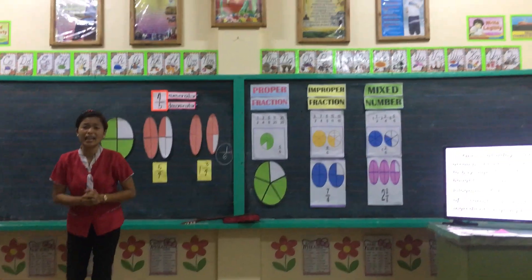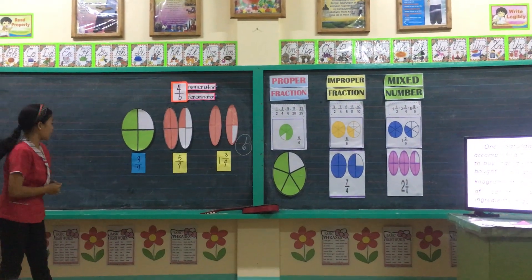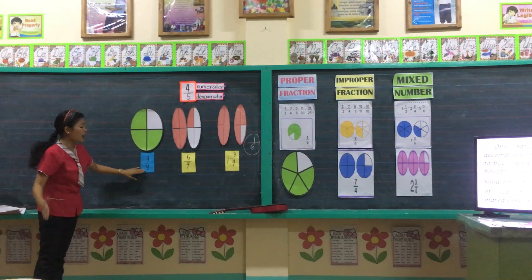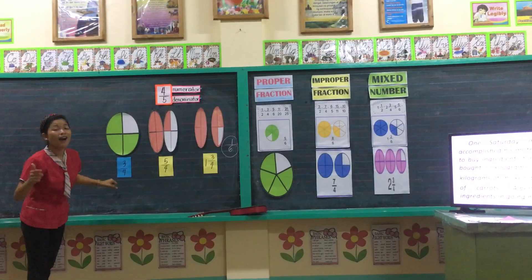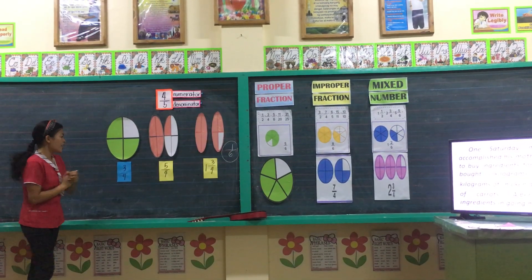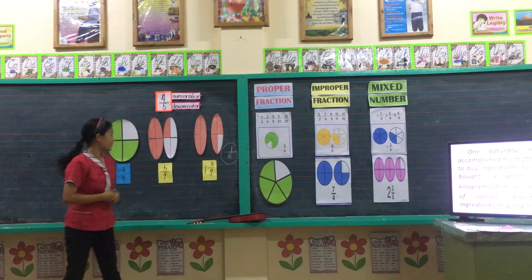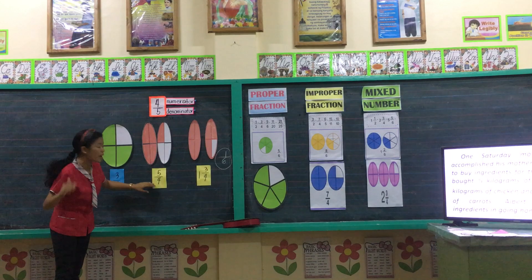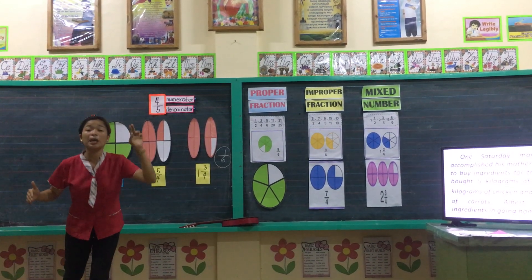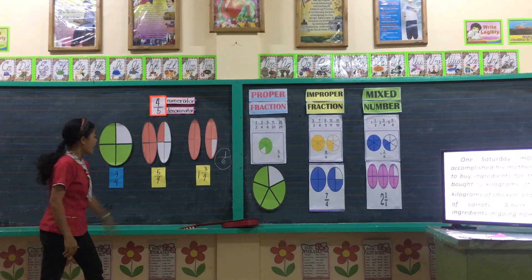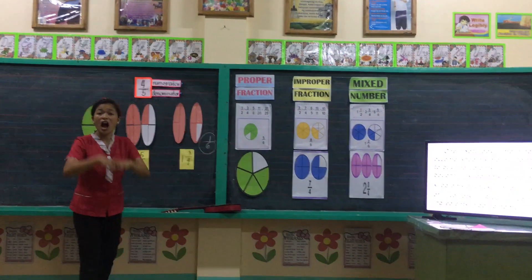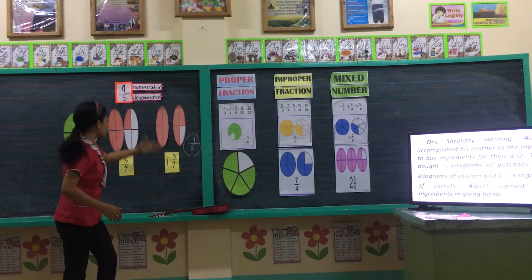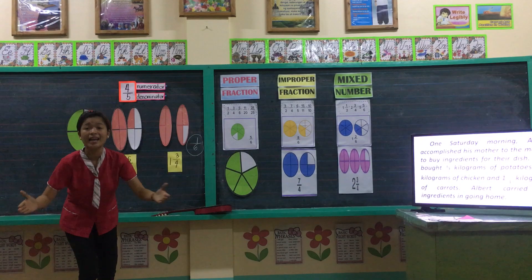Now, what can we say about the first fraction? Very good. The numerator has a smaller value compared to its denominator, and that is a proper fraction. For the second one, five has a bigger numerator compared to its denominator, and that is an improper fraction. And lastly, one — that is a whole number combined with a proper fraction, so that type of fraction is a mixed number.